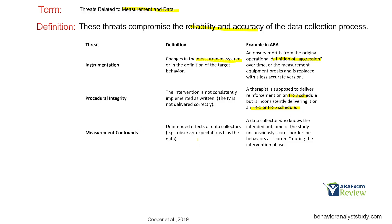Measurement confounds are unintended effects of data collectors. A data collector who knows the outcome of the study starts to score or measure in a way that behaviors are helping the study. This is common especially in academic research fields. Whether you're working in clinical or home settings, you want to be as honest as possible, control your biases, and the data needs to be the data — we need to record exactly what has happened.